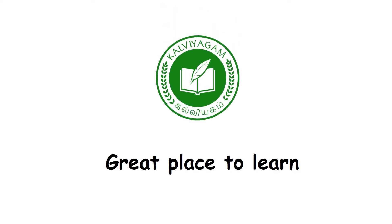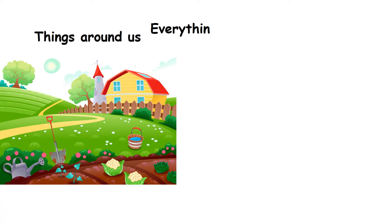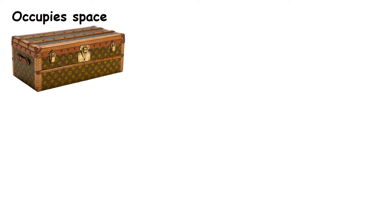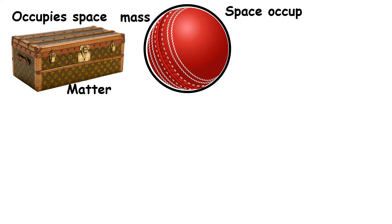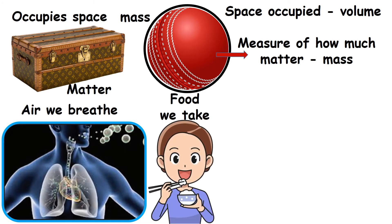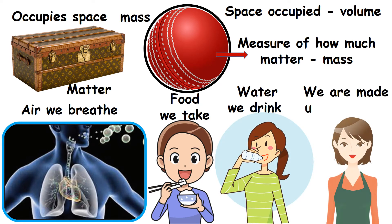Great place to learn. States of Matter. We can see a number of things around us. Everything we can see and touch is made up of matter. Anything that occupies space and has mass is called matter. The space occupied by an object is called its volume. Measure of how much matter is in an object is called its mass. The air we breathe, the food we take and the water we drink all have matter in them. Even we are made up of matter.